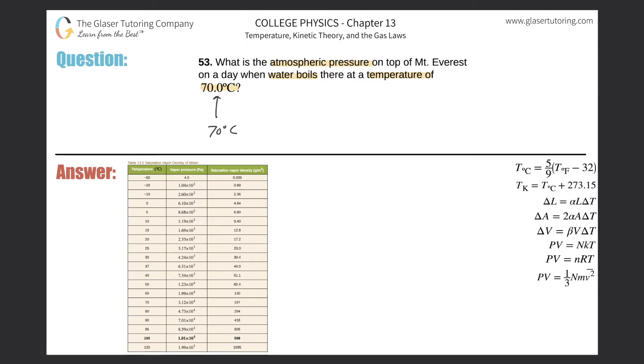So you need to have this table handy that I have on the screen. And what you're going to do is look up 70 degrees Celsius and find the corresponding pressure. You'll see that it says vapor pressure, but it's the same thing as atmospheric pressure. Basically, whenever the vapor pressure of water equals the atmospheric pressure, water will boil at that given temperature.